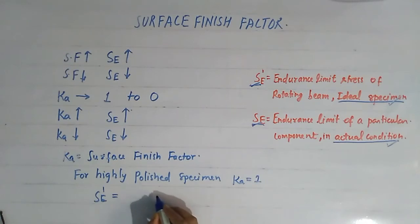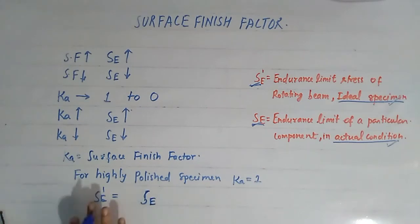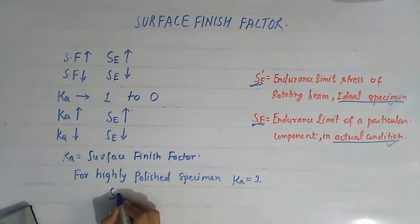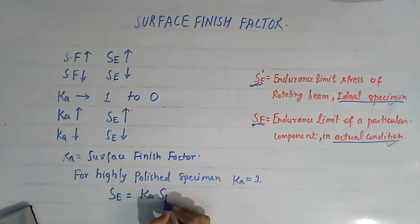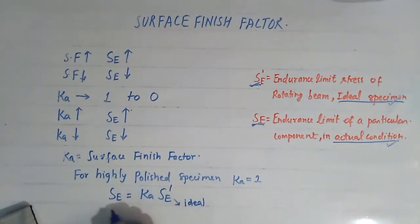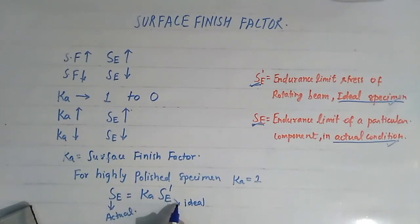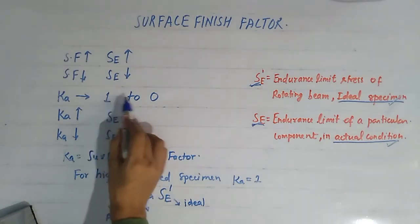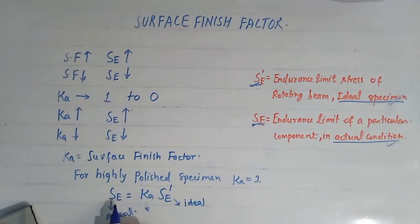If we want to determine the endurance limit of the actual specimen in actual condition, the endurance limit will decrease. The endurance limit of the actual specimen can be given in terms of the endurance limit of the ideal specimen using the surface finish factor Ka, whose value varies from one to zero. Therefore, the endurance limit of the actual specimen will always be smaller than the endurance limit of the ideal specimen.